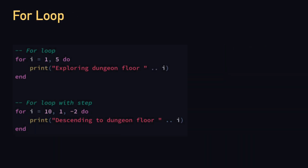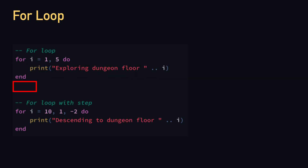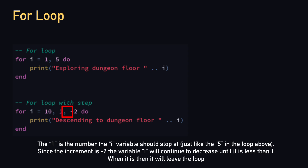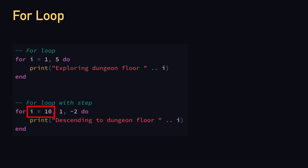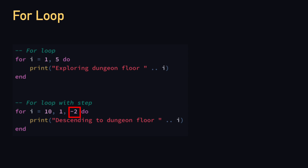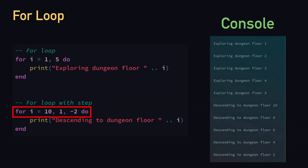The next example is for loops. For loops allow us to loop a condition a fixed number of times. In this example, we set the for loop start number to 1 and make it loop until it reaches 5, exploring floors of the dungeon until the 5th floor. The other for loop is different — it has a start number, an end condition of 1, and a step of negative 2. The initial number is 10, so it decrements by 2 each iteration: 10, 8, 6, and so on, going up the dungeon by 2s instead of 1s.